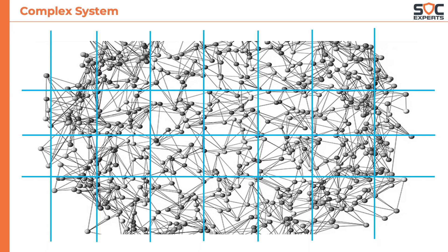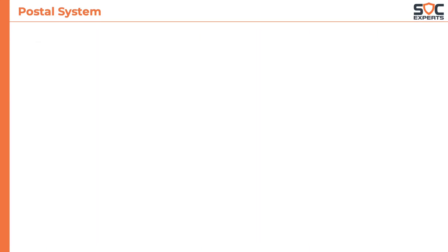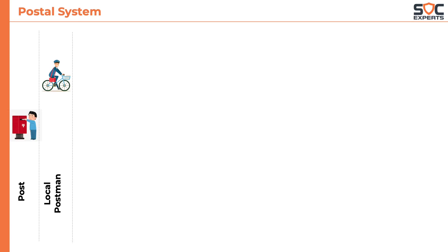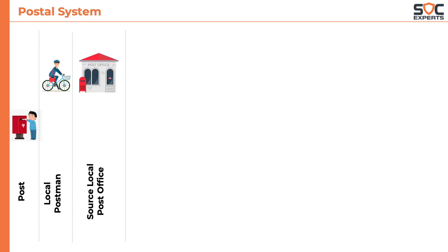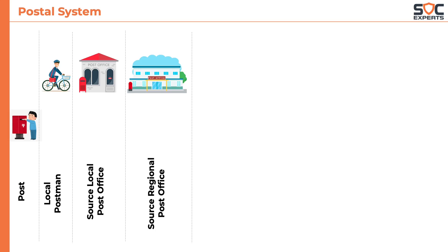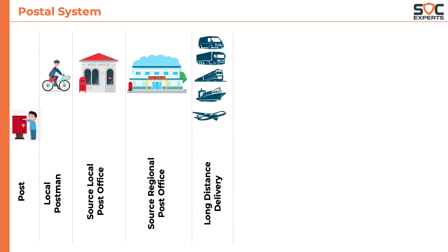Let's take the example of a complex postal system. The sender writes a letter and posts it in a post box near his house. The local postman collects the letters from these boxes at various intervals and takes them to the local post office, typically in a village, town, or part of a big city. These letters are then sent to a regional post office — south side, east side, west side, or north regions of the country — where the major decision is made on how the letter would be transmitted, either by road, rail, air, or water.